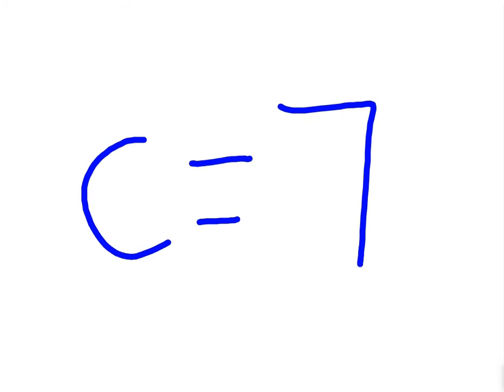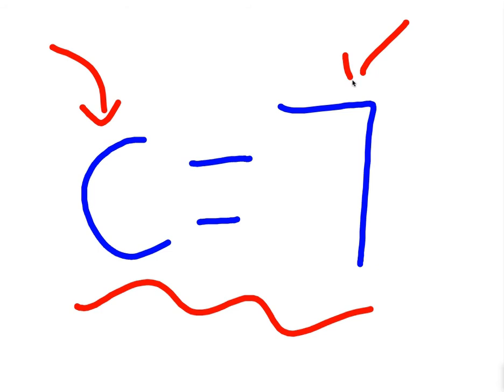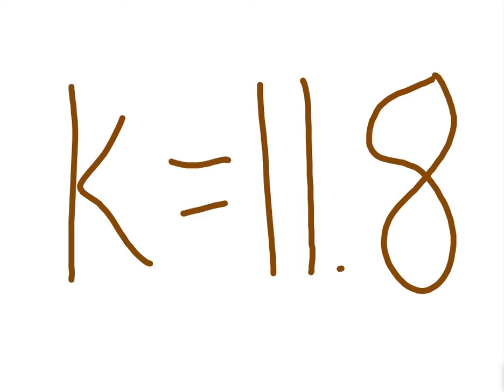A lot of times in math, we also use the letter c, because c is the first letter in the word constant. And if we say c equals 7, well, that's not changing. That's a constant number, and will always be equal to 7 for that particular problem. And we also use the letter k sometimes. If we said k equals 11.8 and we went on to work on an equation, well, k's not changing. It's not equal to 12, it's not equal to 11 or 57. It's always equal to 11.8.